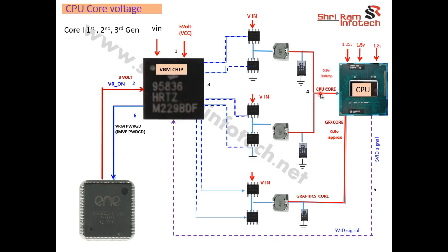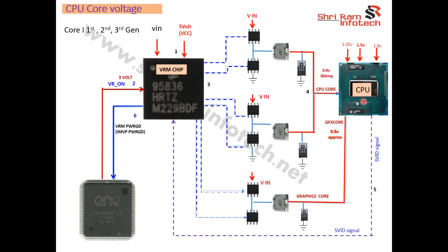If there is no short circuit, connect the processor and check the resistance again — it should not read zero ohms; it should show some resistance. If the CPU is not shorted and both input voltages and the VR_ON signal are present at the VRM chip but the CPU core voltage is still not generating, then the VRM chip itself is likely faulty and needs to be replaced.